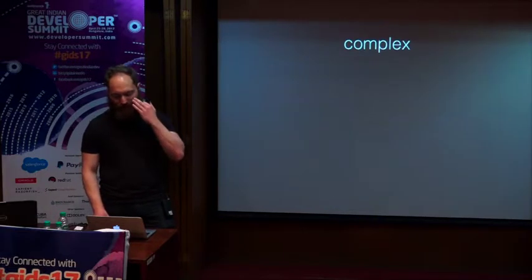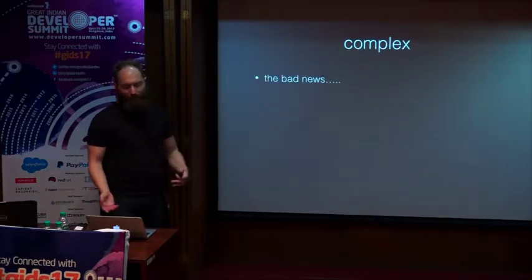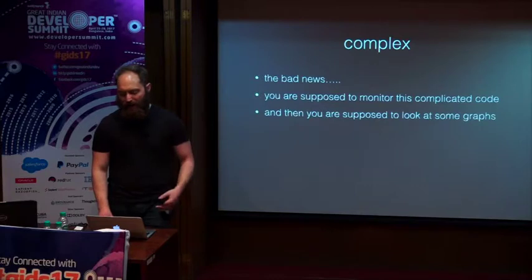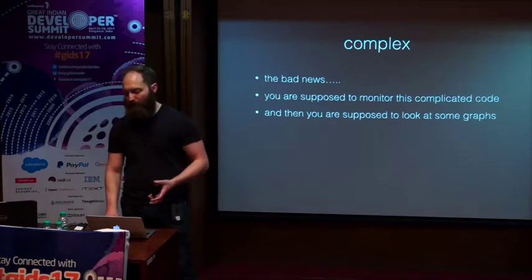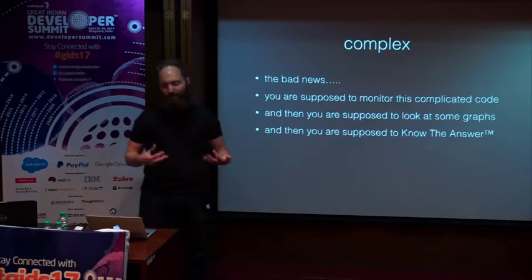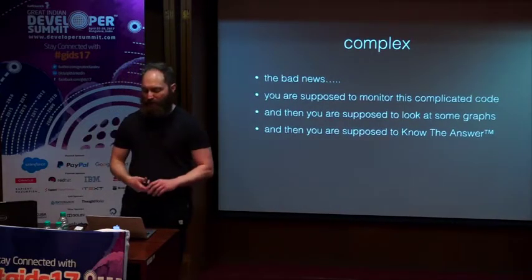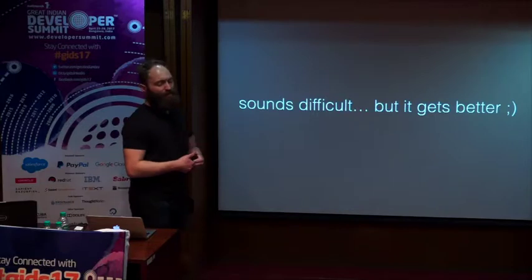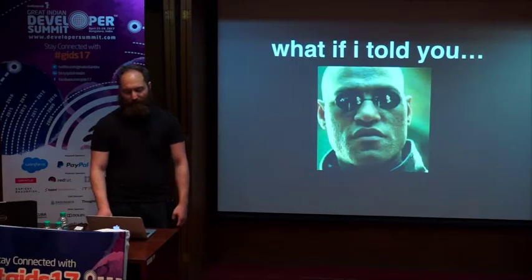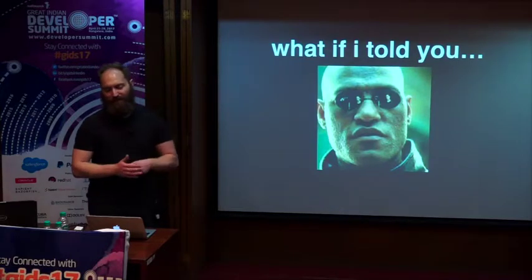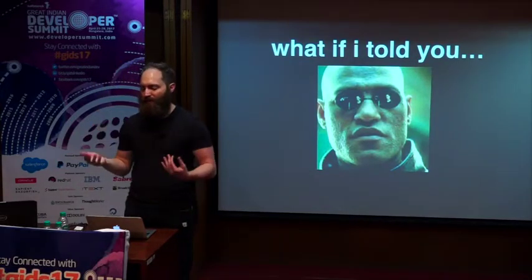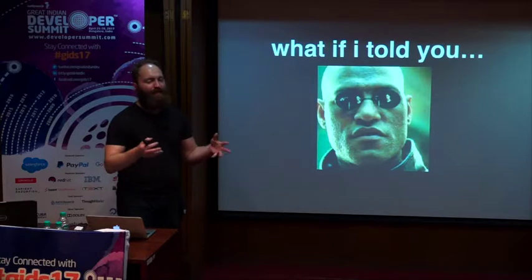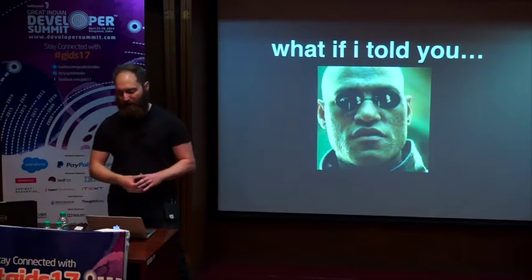The bad news about really complex software systems is that you're supposed to figure out some way of monitoring this really complicated code, and you're supposed to look at the graphs you've created, and when something goes wrong, use those graphs to tell you what actually went wrong, why it went wrong, and how to prevent it in the future. That sounds really, really difficult, but it gets even better. None of the code written to monitor the Linux networking stack can possibly be correct, because the things that code is monitoring are giving false information to begin with.